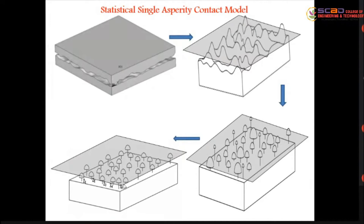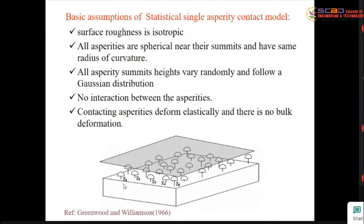The two rough surfaces can be converted into an equivalent single rough surface carrying hemispherical asperities. The asperities are considered to have the same radius of curvature and are allowed to contact a rigid flat plane. The assumptions for the statistical single asperity contact model begin with the rough surface being isotropic — that is, the surface condition is assumed to be the same in all directions.